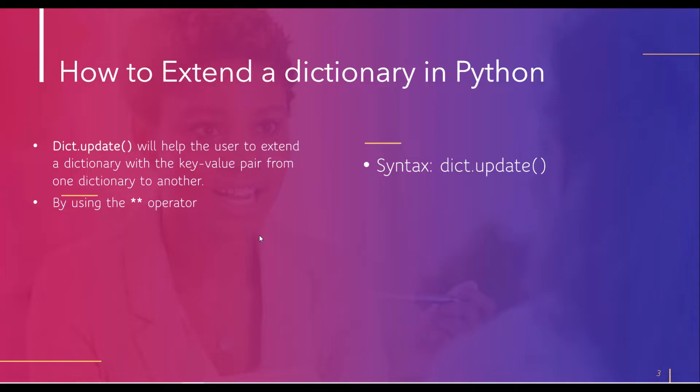The second method is the star-star (**) operator. You can also use the ** operator for extending a dictionary, and this method adds the specified dictionary elements to the end of the current dictionary.